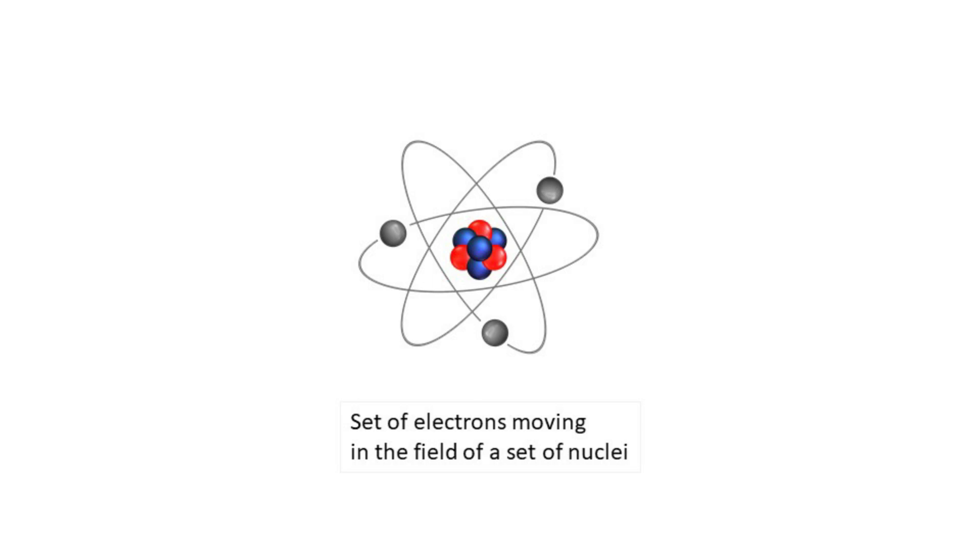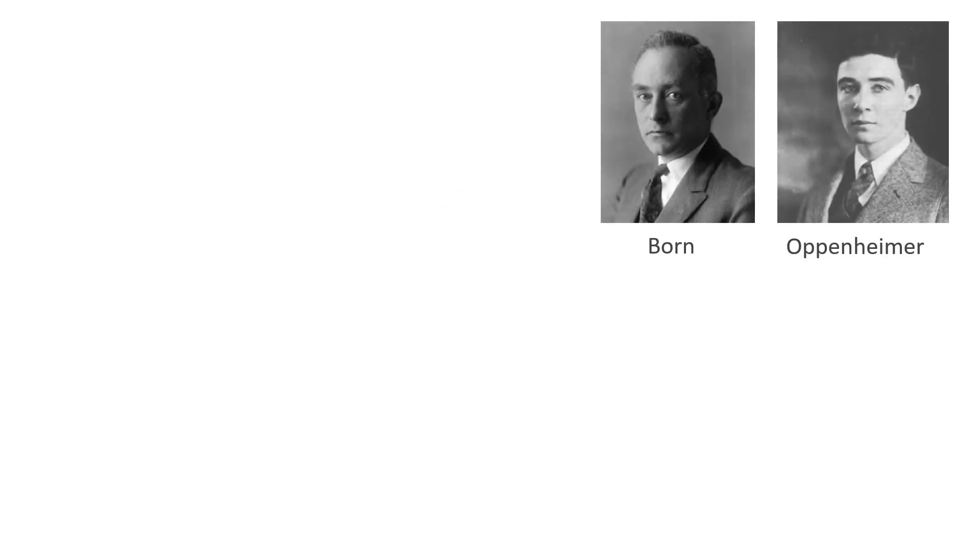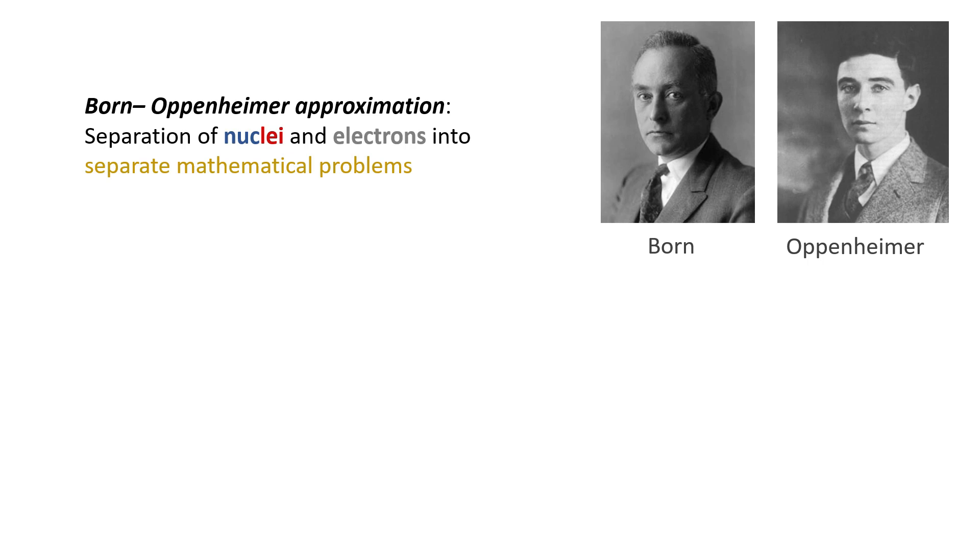This idea was implemented by Born and Oppenheimer, so this is an approximation. For the nuclei case, they showed that if there are M number of nuclei with positions R1, R2, and so on, then the ground state energy will be a function of the position of the nuclei.